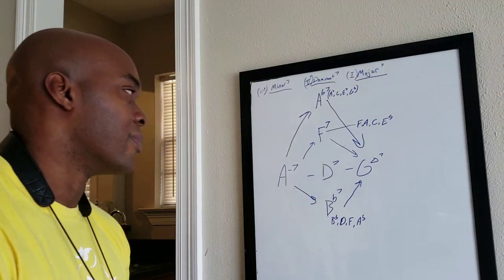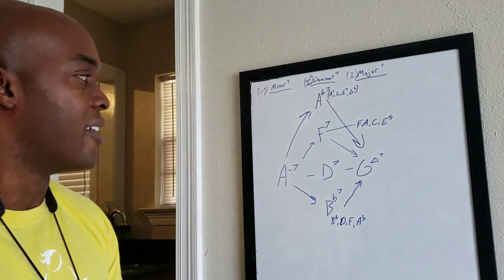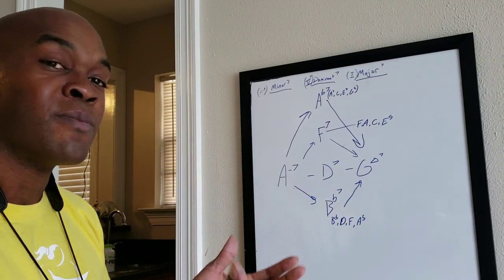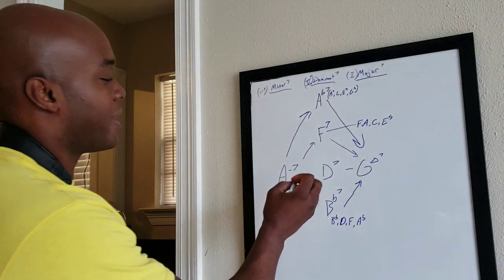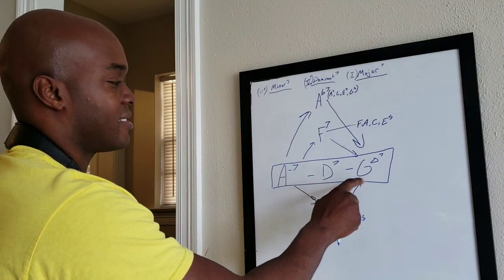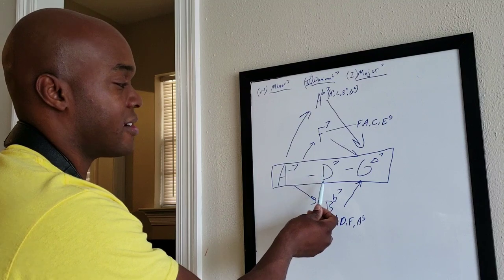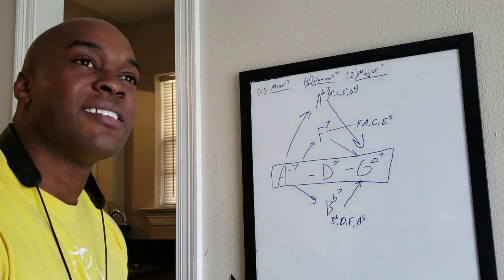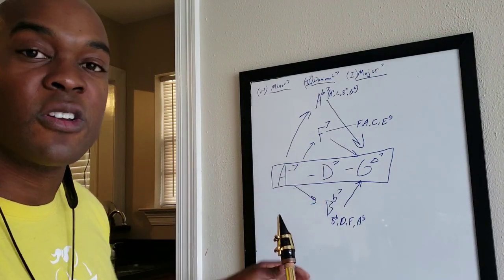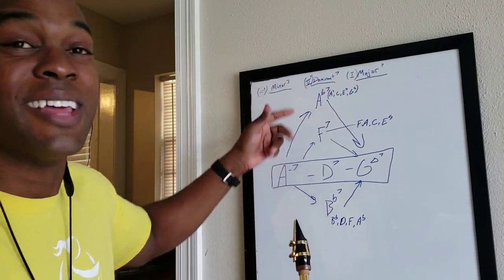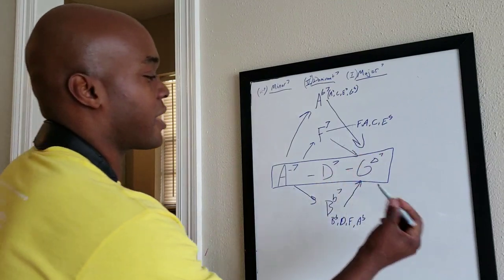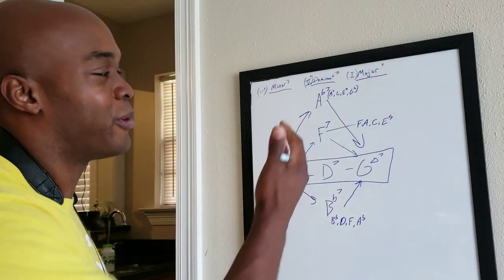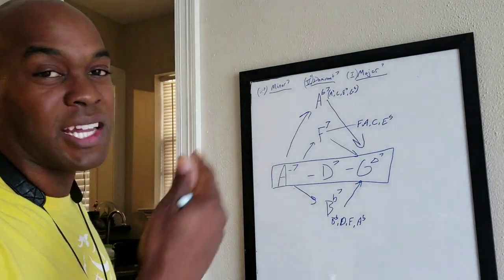We can go into an altered dominant scale lesson later. My easiest way to figure out what chord I can substitute over any dominant in a two-five-one is: take your original dominant chord and ask yourself, 'this dominant chord is the third of what other dominant chord?' For example, D is the third of B-flat. So I make my target dominant chord the third, and that tells me what other dominant chords I can use as substitutions.